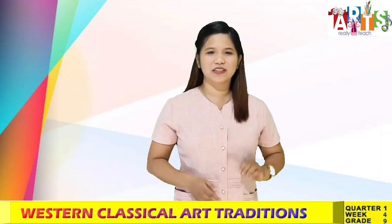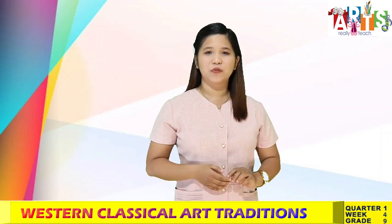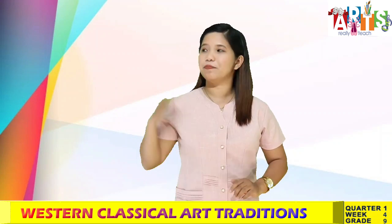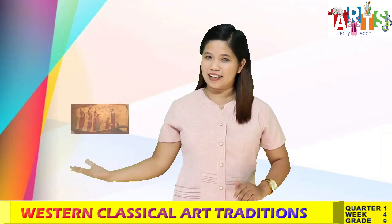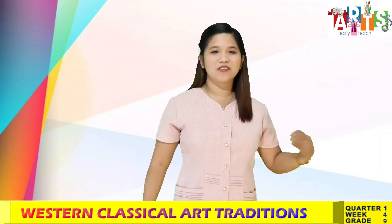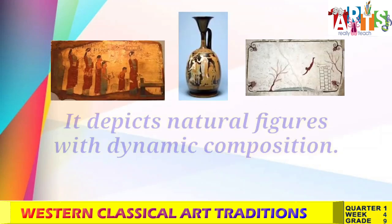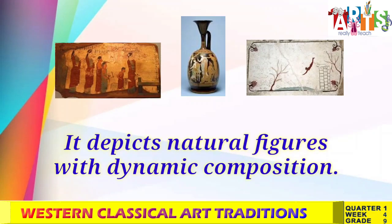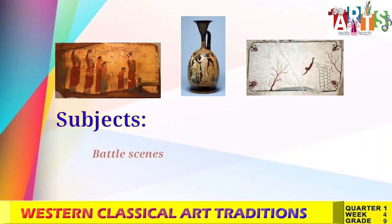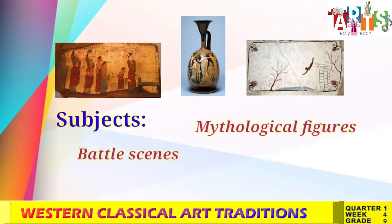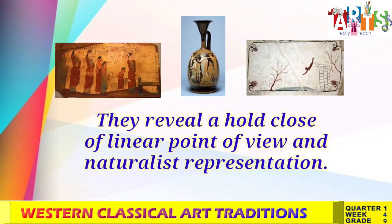Paintings during the classical Greek era were most commonly found in vases, panels, and tombs. It depicts natural figures with dynamic composition. Most of the subjects were battle scenes, mythological figures, and everyday scenes. They reveal a whole class of linear point of view and naturalist representation.